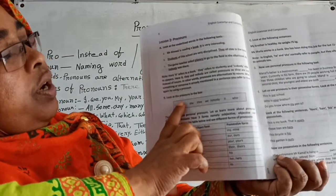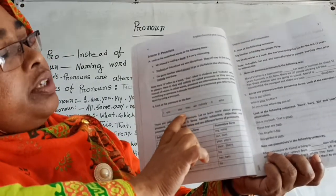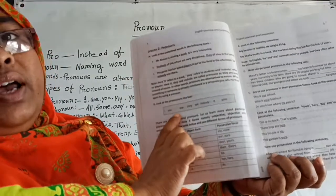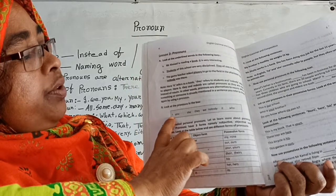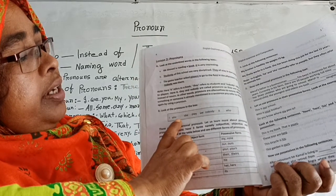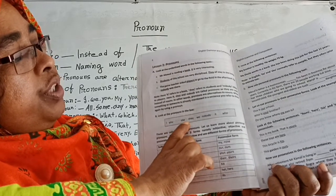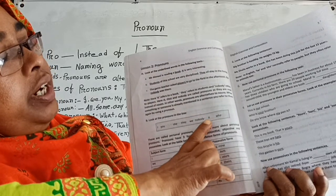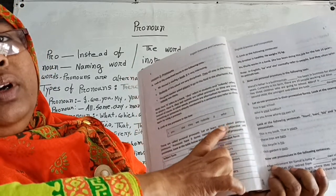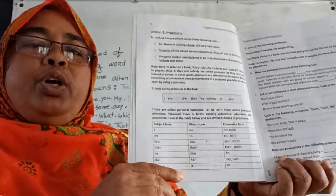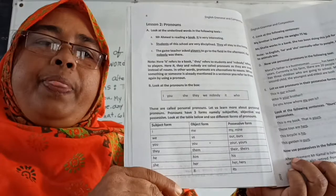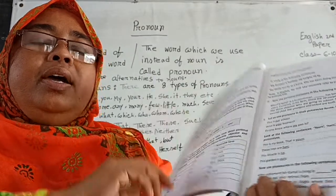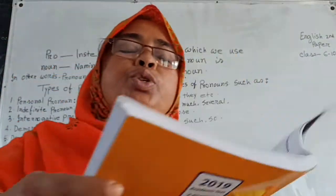Look at the pronouns in the box: I, you, she, they, we, nobody, it, who.